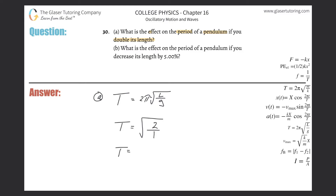The square root of 2 is about 1.41. So this is how the period will be affected — if the length goes up by a factor of 2, then the period goes up by a factor of 1.41. In other words, you double the length, you get an increase of about 40% in terms of the period.